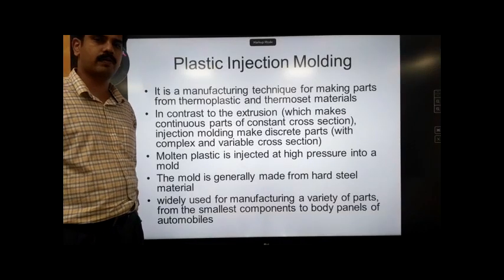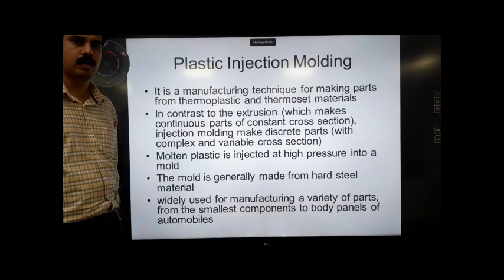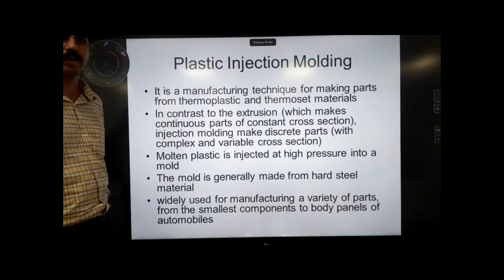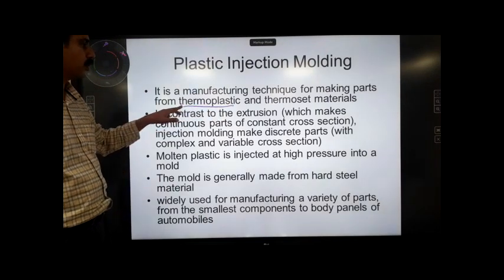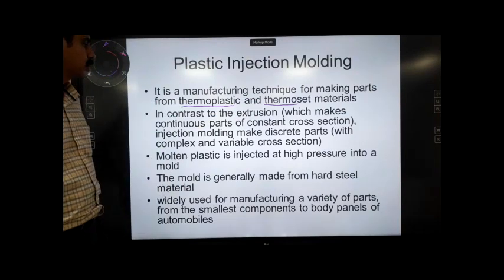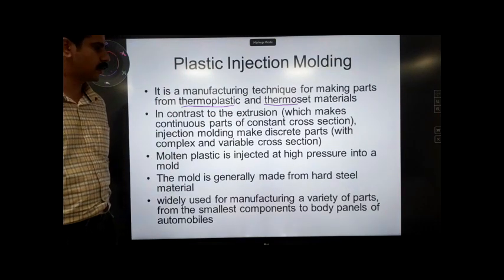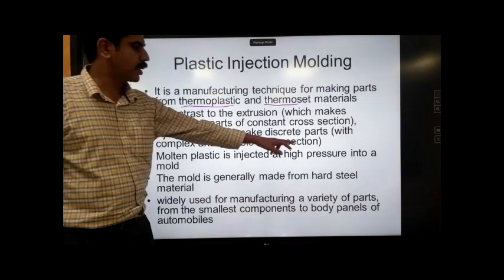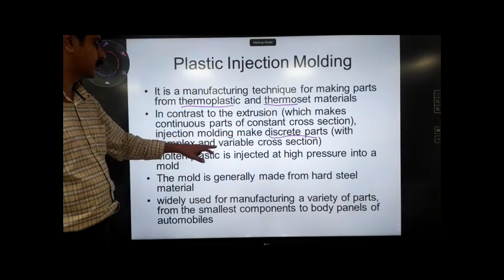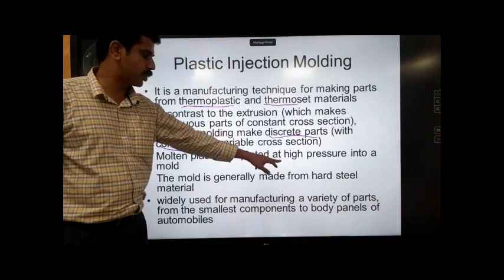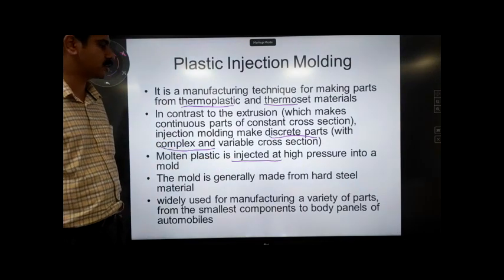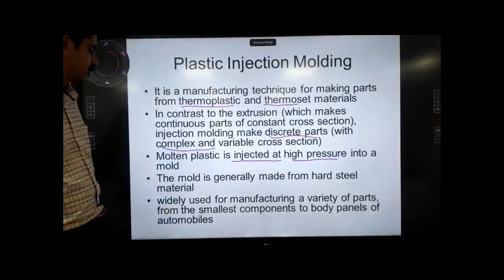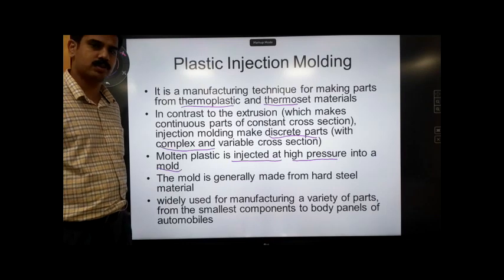Today we are going to have a detailed discussion on plastic injection molding process. This process is a manufacturing technique used for both thermoplastic as well as thermoset materials. In contrast to the extrusion process, injection molding is used for making complex shaped discrete parts, and the molten plastic is injected at high pressures. The process is named injection molding because high pressure material is injected into a mold.